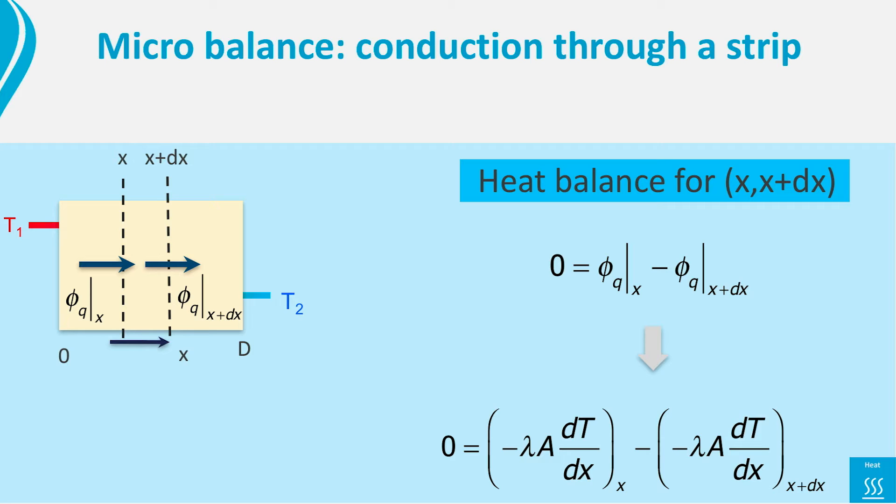So, we are left with the derivative of the temperature at x plus dx minus the derivative of the temperature at x equals 0. This looks complicated, but if we take a closer clue, it actually states that the function between the brackets at x plus dx minus that function between brackets at x equals 0.